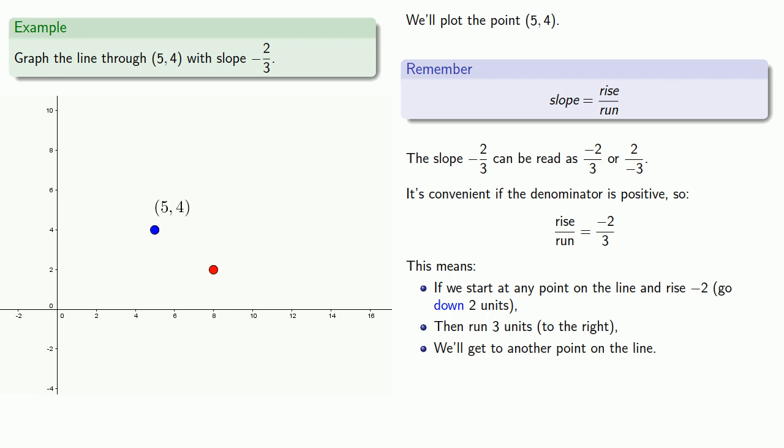And it's worth writing down that if we go down 2 and right 3, we get to the point (8, 2). And since this is a graph of a line, two points are enough to draw the line.